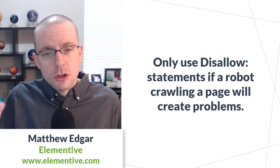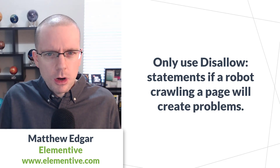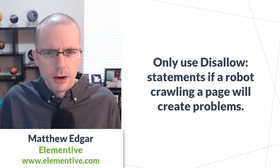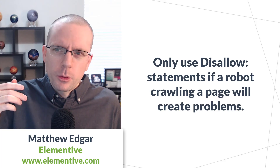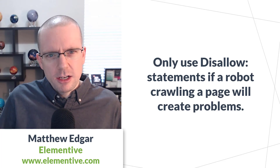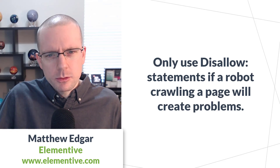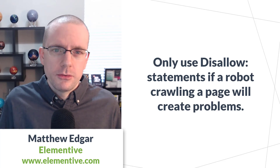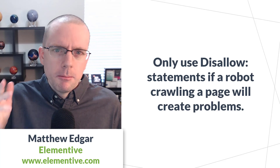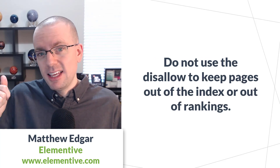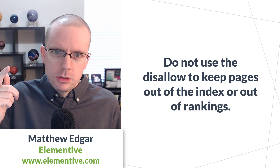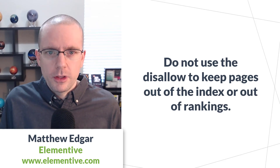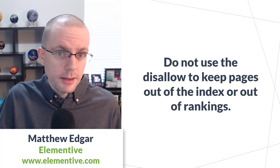To recap: use a disallow when you don't want Google to crawl a page because it's not something they need to evaluate, or because it's going to cause problems if they crawl it — like a cart page on an e-commerce site. Do not use disallow if you're intending to keep things out of the index, or if you're trying to reduce how much Google crawls certain types of files. There are better options for both of those situations, and disallow should only be used in very limited circumstances.